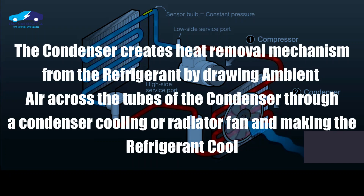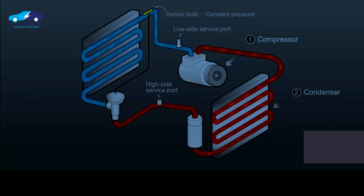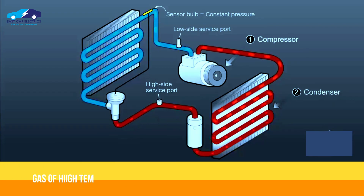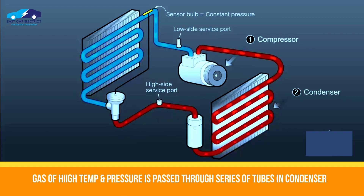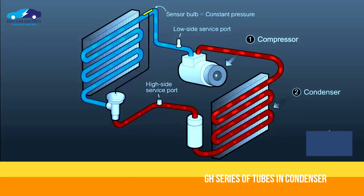The condenser creates a heat removal mechanism from the refrigerant by drawing ambient air across the condenser tubes through a condenser cooling or radiator fan, making the refrigerant cool. As enough heat is removed, the condenser condenses the vapor refrigerant and converts it into a liquid state — condensation occurs.